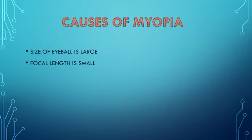Till now, we have discussed what is myopia and how we can correct myopia with the help of a concave lens. Now what are the causes of myopia? There are two main causes. First, the size of the eyeball is large. Second, the focal length is small.